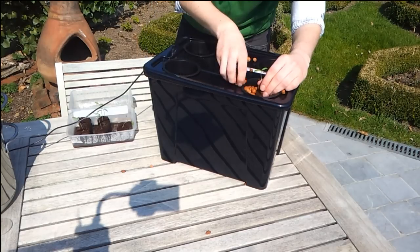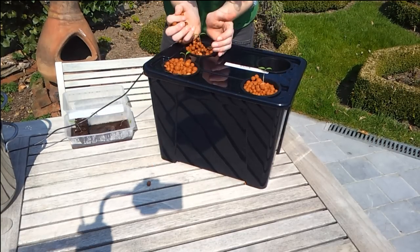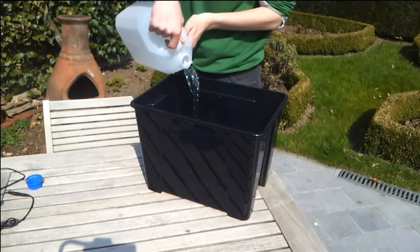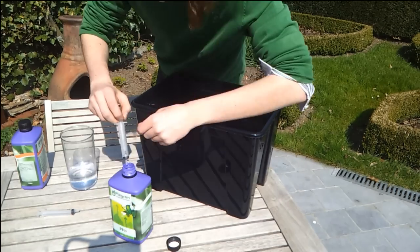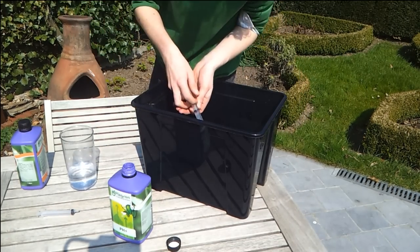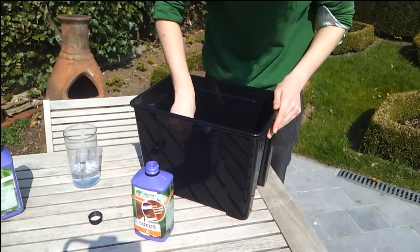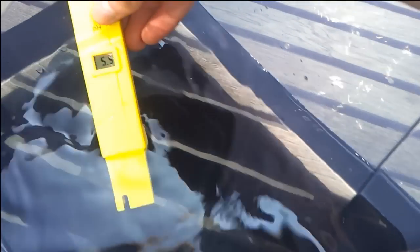Once the box is ready and the seedlings are a couple of centimeters tall, you can place them in net cups and fill the rest of the cup with clay pebbles. Fill the boxes with nutrient solution to a level so that the bottoms of the net cups are submerged by about 5 centimeters. For a more detailed video on how to do all of this, you can click here.